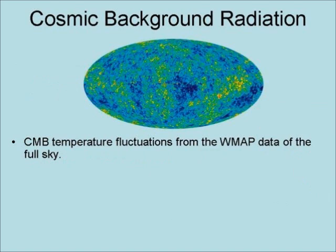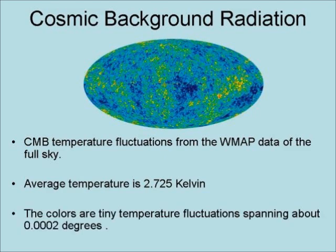This is a map of the cosmic microwave background temperature fluctuations from the Wilkinson Microwave Anisotropy Probe data of the full sky. The average temperature on this map is 2.725 Kelvin. The colors on this map represent tiny temperature fluctuations spanning about 0.0002 degrees.